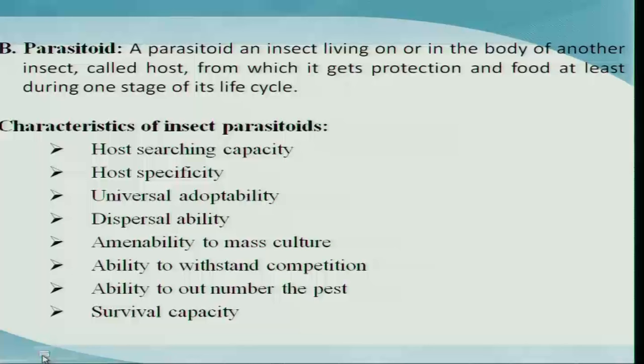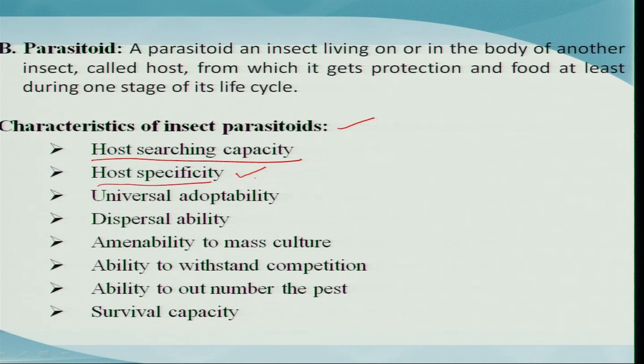Some insect groups identified as quite potential parasitoids are utilized on insect groups such as defoliators or pest herbivores in biocontrol programs. Now, what are the important qualities to look for when selecting a parasitoid? It should have a very good host searching capacity so it can seek the host and parasitize it, and it should have host specificity — meaning it should be a major parasitoid on the key pest for which it is released or recommended.